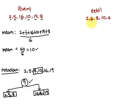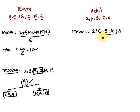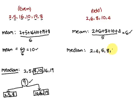Now we consider another example with five numbers — an odd count. The five numbers are 2, 6, 8, 10, and 4. The mean is found the same way: sum all numbers: 2 plus 6 plus 8 plus 10 plus 4, divided by 5 = 30 / 5 = 6. The average or mean is 6. For the median, first write the numbers in ascending order: 2, 4, 6, 8, 10.